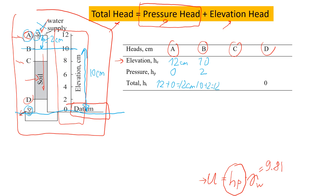Now let's go to point C. The elevation head is 8 centimeters — that's the distance from the datum to point C. Above point C there are four centimeters of water, so the pressure head is four centimeters. The total head is 8 plus 4, which equals 12 centimeters.